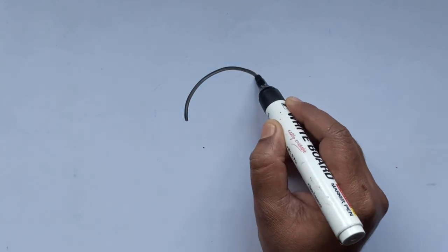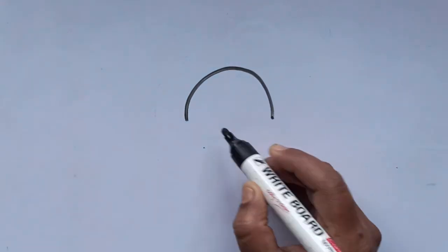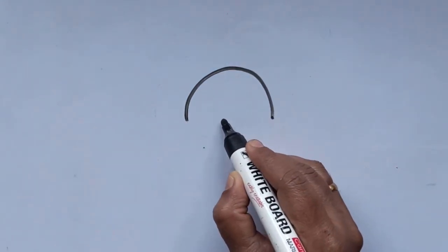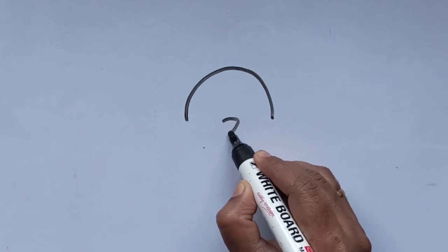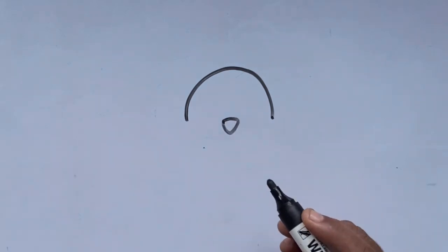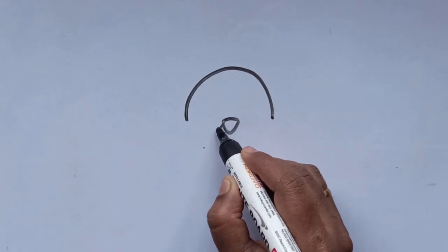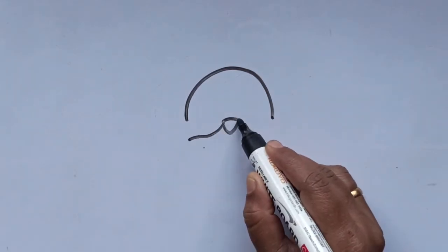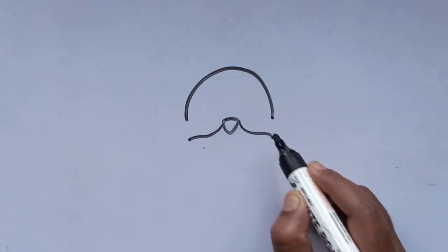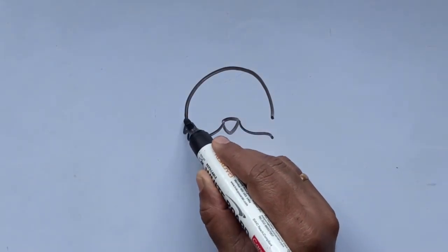Start with a nice curved line in the middle of the page. Draw a tiny nose in the center. Let's draw a curved line on the left and right. Join the lines as shown here.